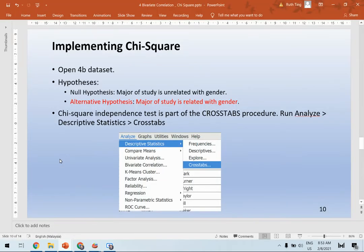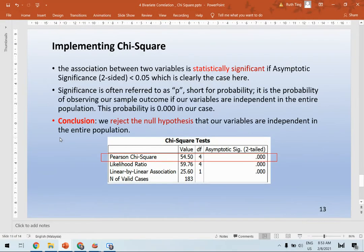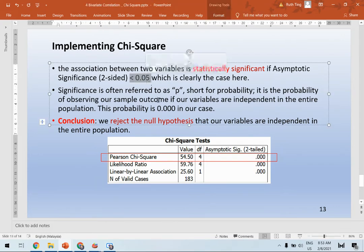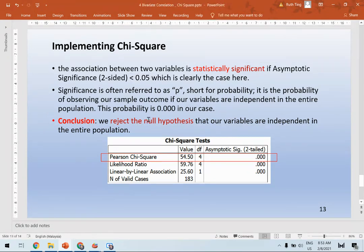Let's look at this slide. So we have this table just now, the chi-square tests. What does it mean? The asymptotic significance two-tailed means that if it is less than 0.05, you can reject the null hypothesis or you can accept your alternative hypothesis, meaning it is significant. There is a significant relationship between gender and major of study.